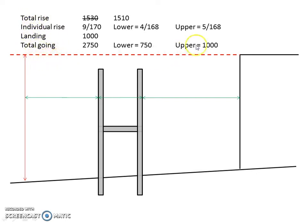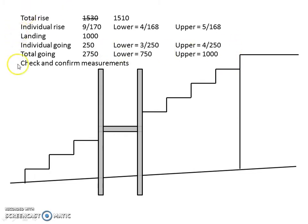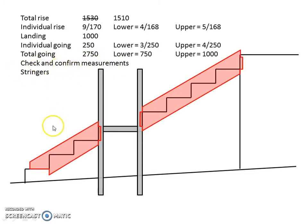That changes our rises to 168. We can also check that all of our rises, goings and ratio are legal — we covered that in the first video, so we know this set of stairs is going to be legal. So that's basically the finished look of the set of stairs we've just calculated: total rise, individual rise. When we consider the landings, that separates into our lower and upper flight. Then we worked out our goings and confirmed our measurements. That leaves working out the stringers — and of course we have two lots of stringers because we've got two flights of steps.